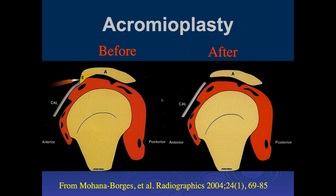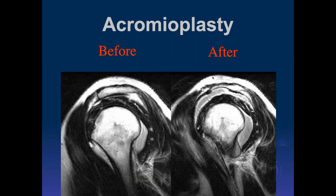Treatment for a type 3 acromion is acromioplasty. Here is an example showing the osteophyte before and after removal. This procedure often also releases the coracoacromial ligament. I still see this occasionally, but mostly in older patients who had it done 15 to 20 years ago.